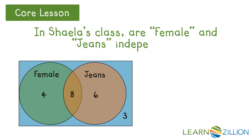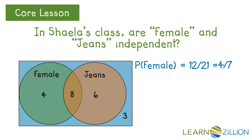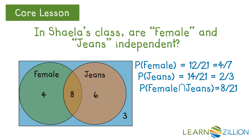In Shayla's class, are female and jeans independent? The probability of being female is 12 over 21, since there are 21 students. The probability of wearing jeans is 14 over 21. The probability of being female and wearing jeans is 8 over 21 — that's the intersection. So is 4/7 times 2/3 equal to 8/21? Yes, it is. That means those two events are independent.